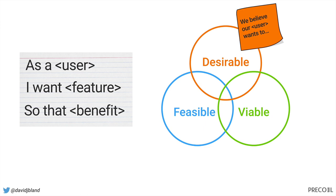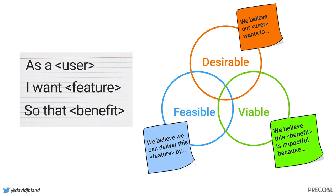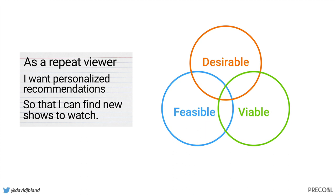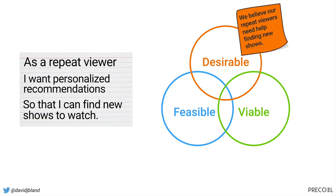I help teams facilitate the conversation around this. We write down our desirability assumptions, feasibility assumptions, and viability assumptions — around the user, the feature, the benefits — and get these out of our heads at a high level. For example, take 'as a repeat viewer, I want personalized recommendations so that I can find new shows to watch.' You might have assumptions like: we believe our repeat viewers actually need help finding shows — but maybe they're fine and don't really need our help. It might actually make the experience worse if we start pushing other things in there.